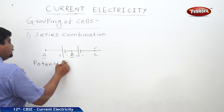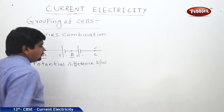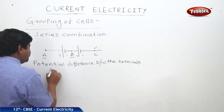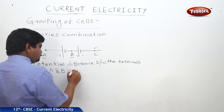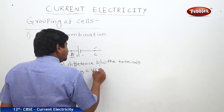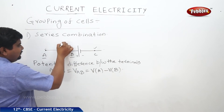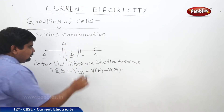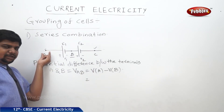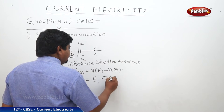The potential difference between the terminals A and B — we can write VAB — is equal to V at A minus V at B. This cell has EMF E1 and internal resistance R1. The second cell has EMF E2 and internal resistance R2. There is no charge here at A, no potential applied at A. So VA minus VB we can get as E1 minus IR1.